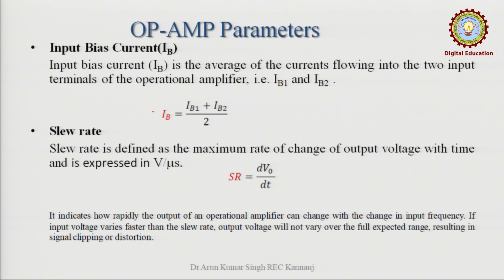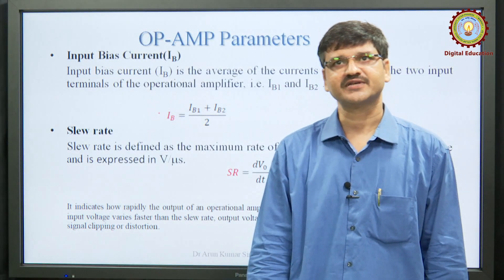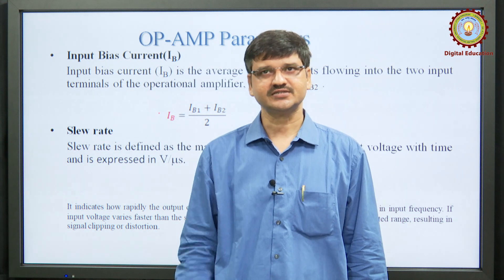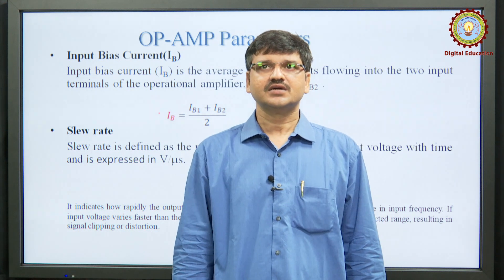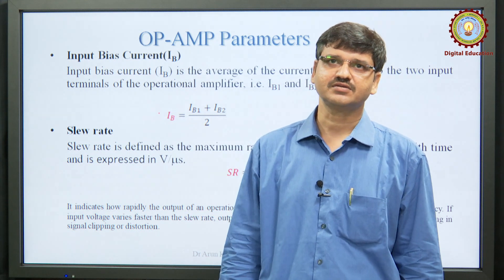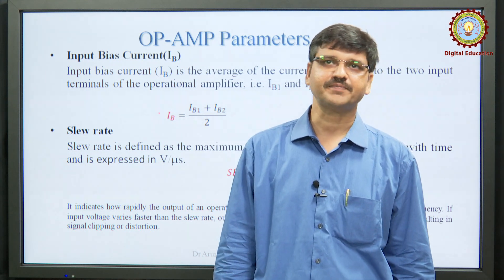The next parameter is input bias current. Input bias current is the average of the currents flowing into the two input terminals of the operational amplifier, that is I_B1 and I_B2. It is simply the average of the inverting and non-inverting currents flowing through the input terminals.